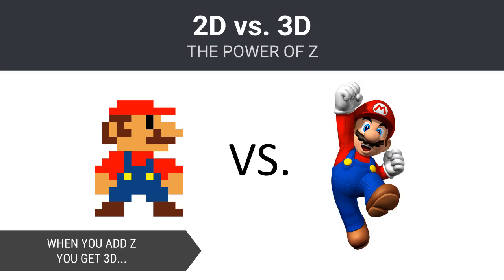It's important to keep in mind that Construct 3 is a 2D game engine. It does not include the rich 3D perspectives possible in game engines like Unity that are ubiquitous within today's AAA game titles. Nevertheless, we can still fiddle with the third so-called Z dimension or Z order to create the appearance of depth.